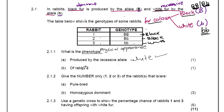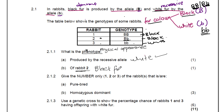What is the phenotype of rabbit 2? Rabbit two has genotype capital B small b. They've asked for the phenotype, not the genotype, so you cannot copy the genotype here. When you look at the rabbit, what is the fur color? It's black. So the answer is black fur.